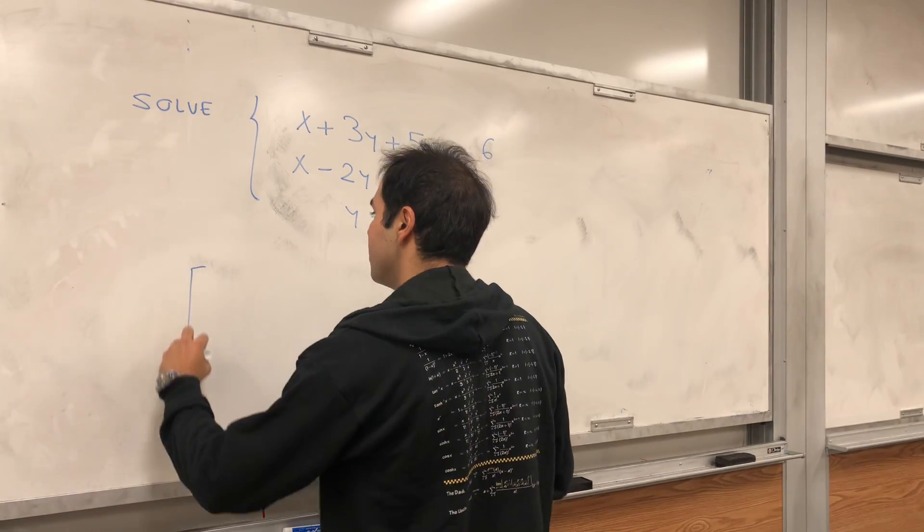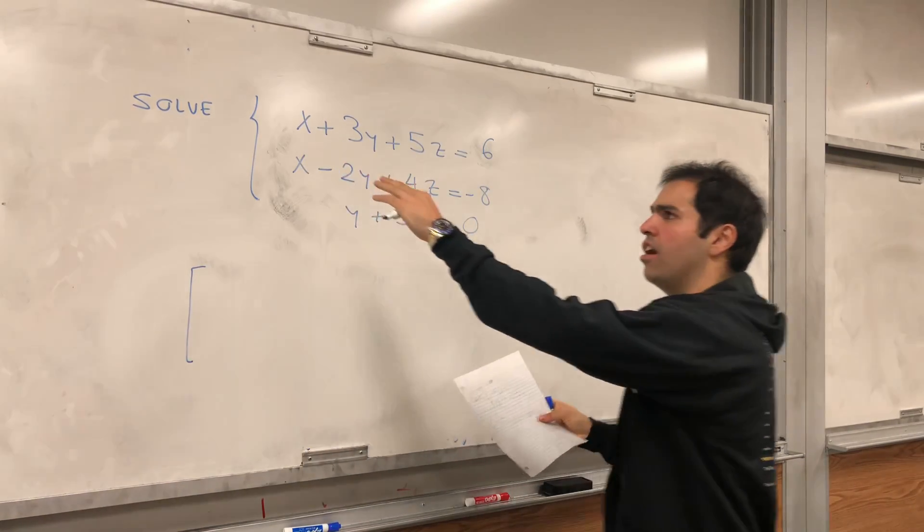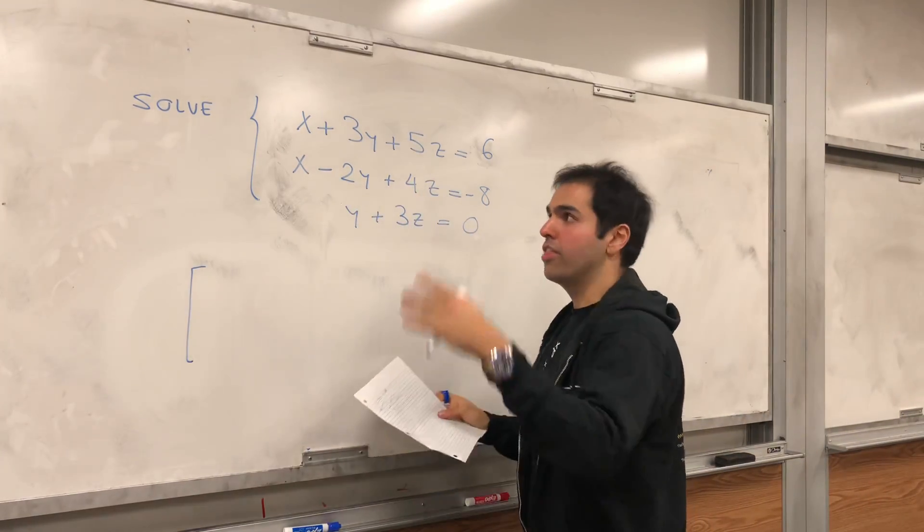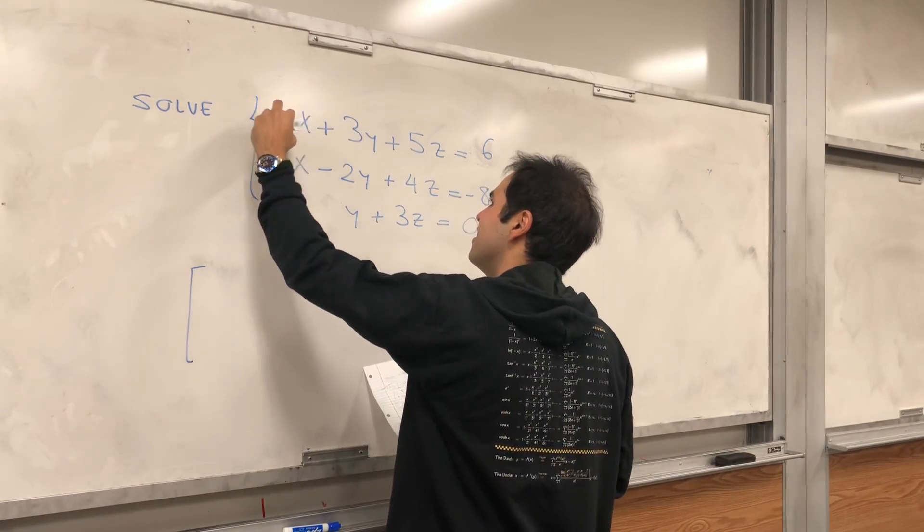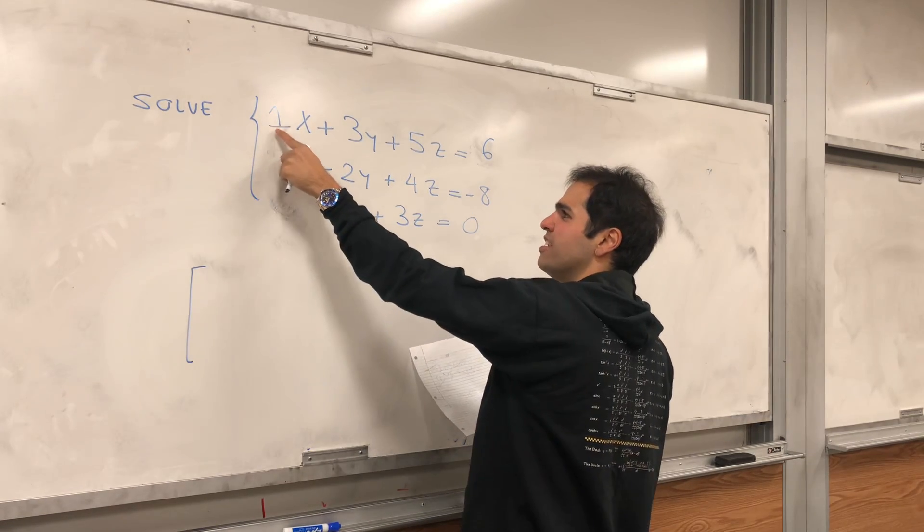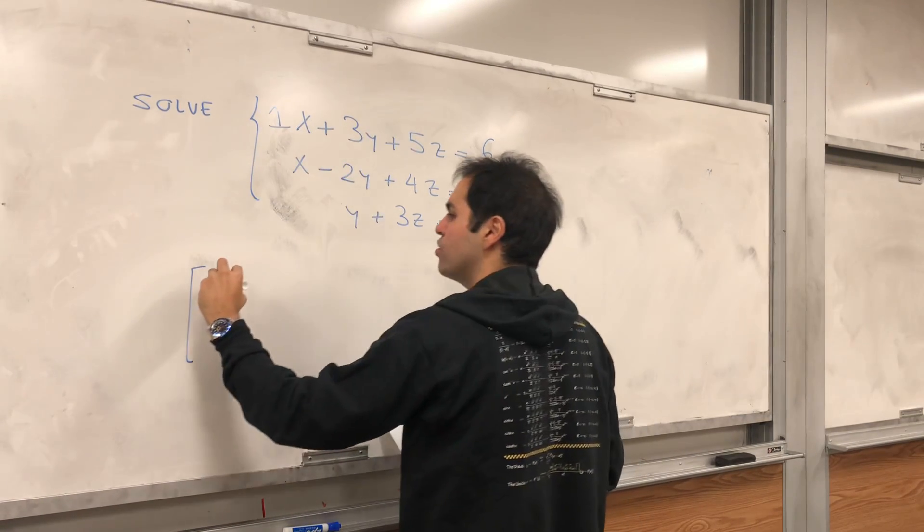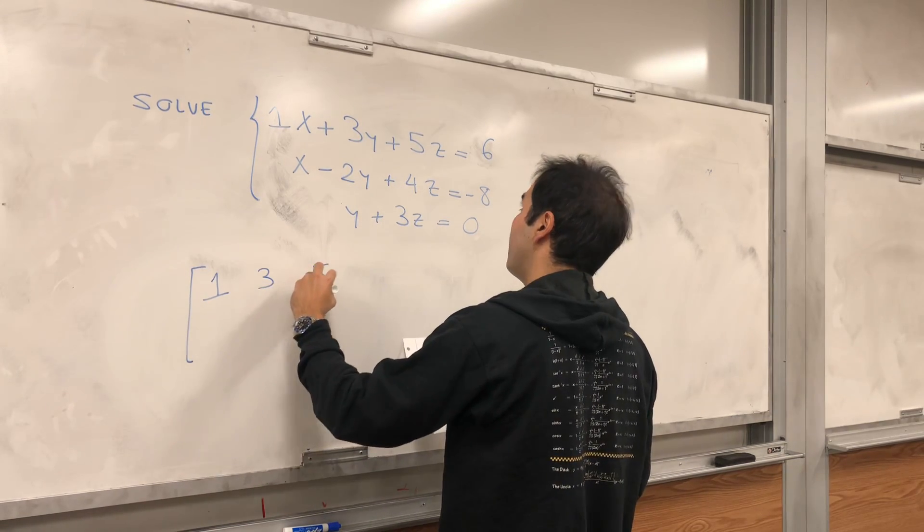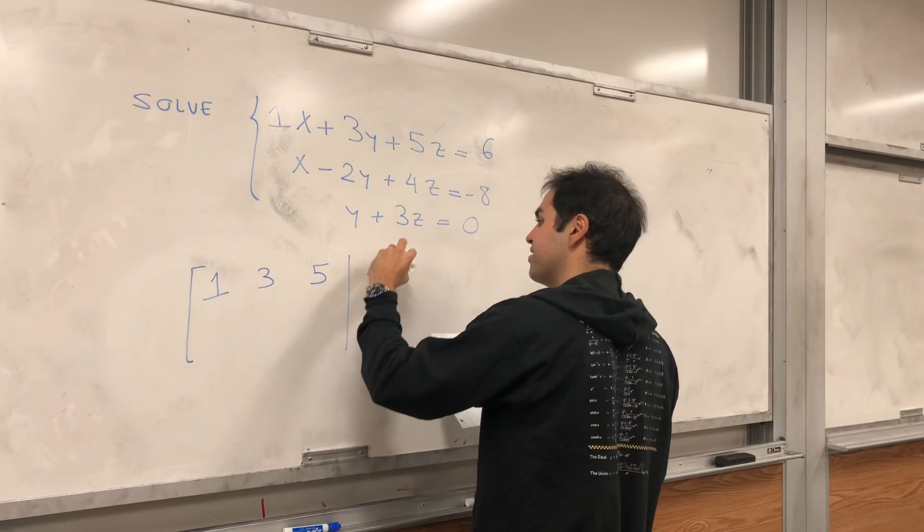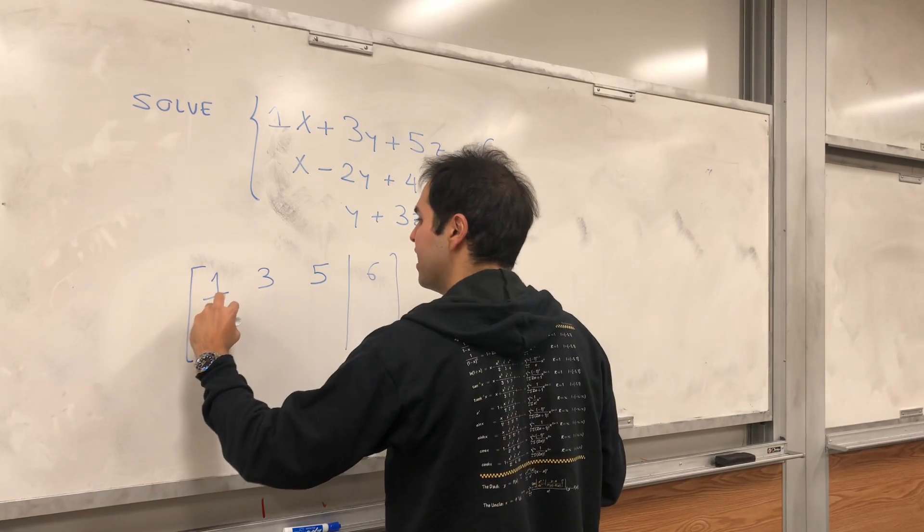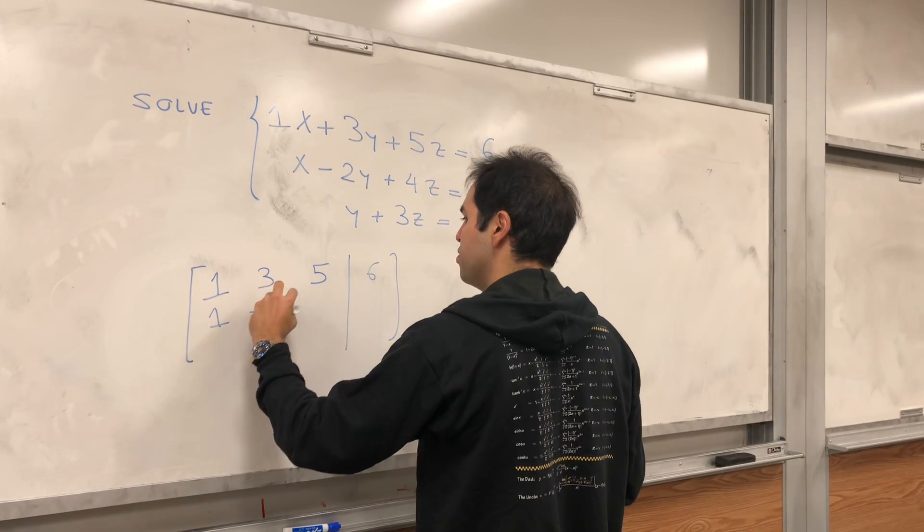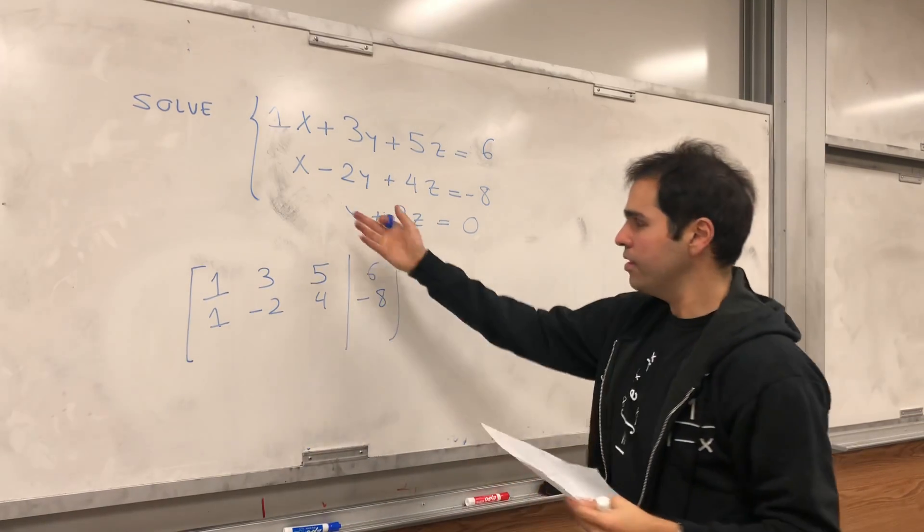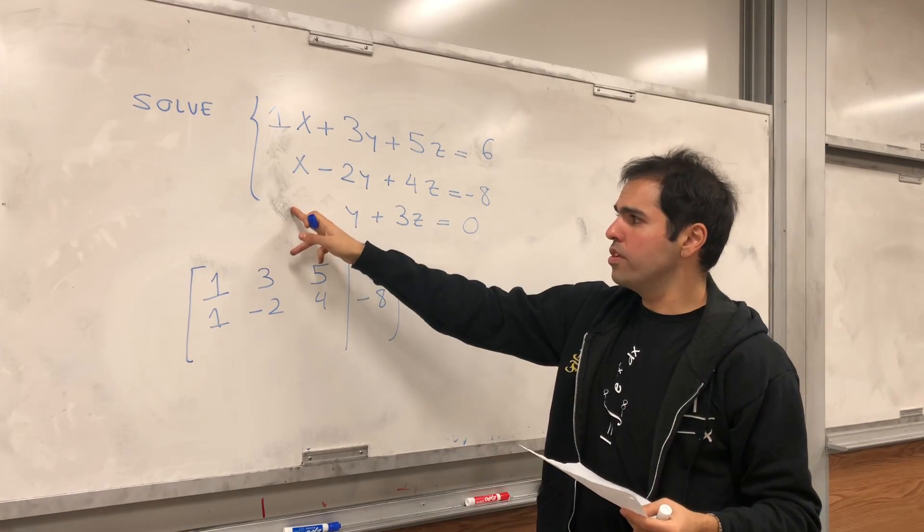So, let's save. Let's put, in other words, all the coefficients in one table called the matrix. And which coefficients? Well, this is 1 times x. So, we put 1, and then 3, and then 5, and then 6. And then, again, 1 minus 2, 4 minus 8.